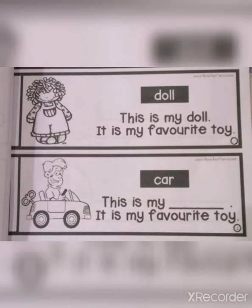Now, look at picture number 2. What's this? It's a car. So, you're going to put 'car' in the blanks. And then, we got the full sentences: This is my car. It is my favorite toy.